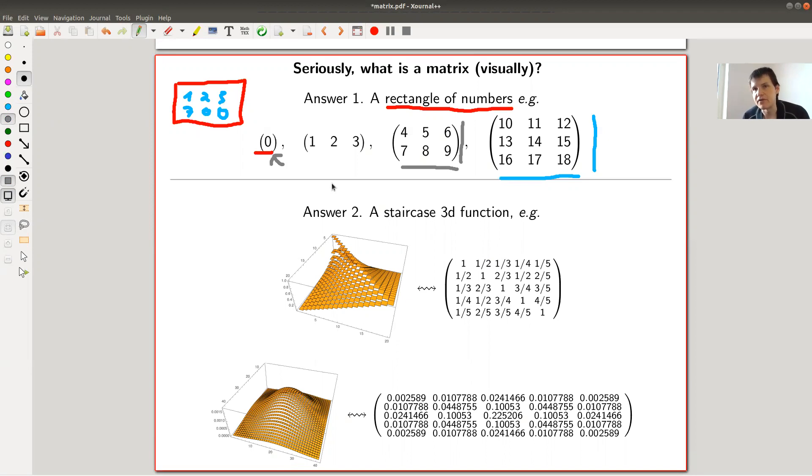Another way how I at least like to think about it is as follows: I would like to think about it as a staircase function in 3D. What I mean is I kind of imagine in these pictures that my rectangle lies in the plane, in the xy plane, and each entry basically gives me a height in the z direction.